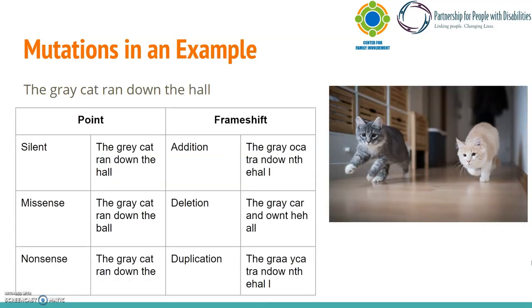To look at mutations, we will rely on a sentence and alter it based on how certain mutations happen. You can see on the right a picture of two cats playing in a hall. An accurate sentence for this picture would be: the gray cat ran down the hall. Now, we know that this sentence makes sense based on the picture. But what happens when a mutation happens to this sentence? First, we will focus on point mutations. The first is the silent mutation, which changes the sentence to: the grey cat ran down the hall. The word gray changed from an A to an E. Does that change our sentence? Not really — you can spell it either way and get the same outcome. This is how it works in genetics too, because of the redundancy mentioned earlier.